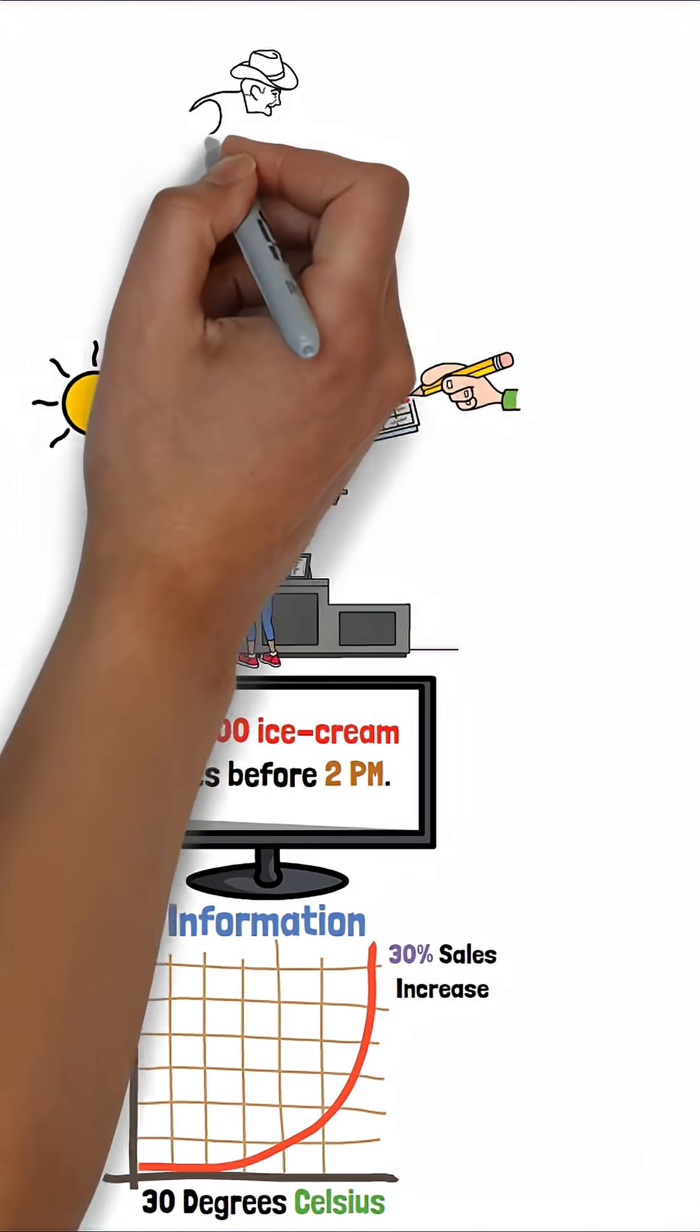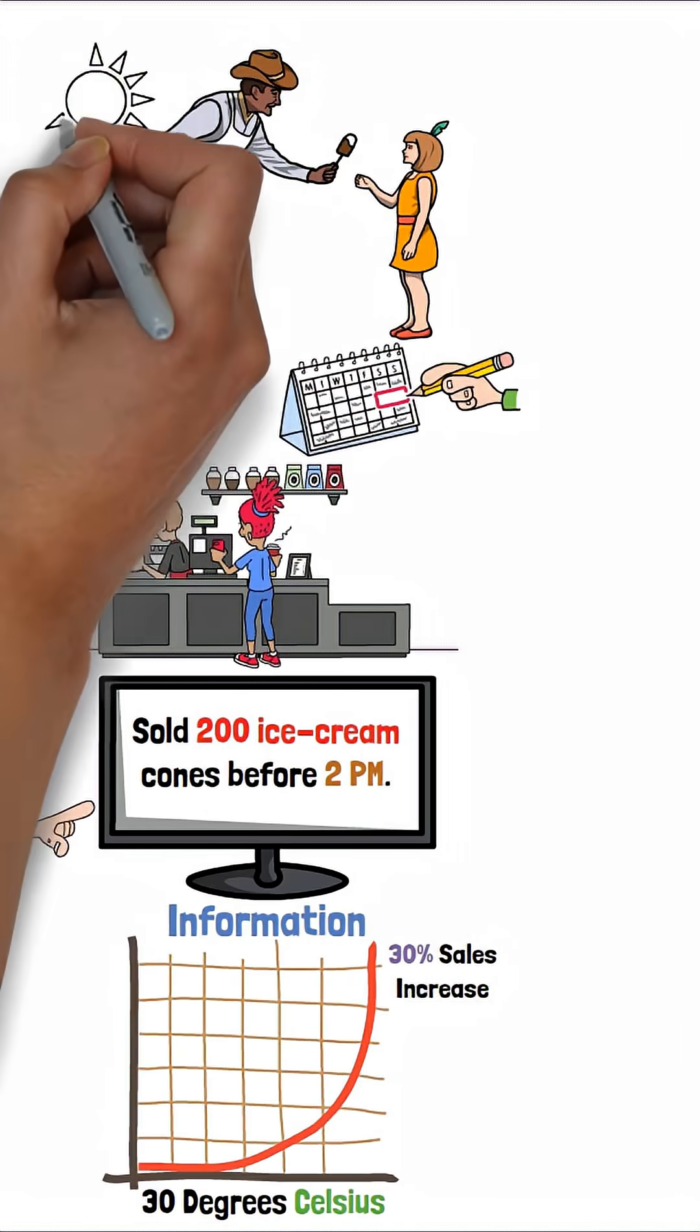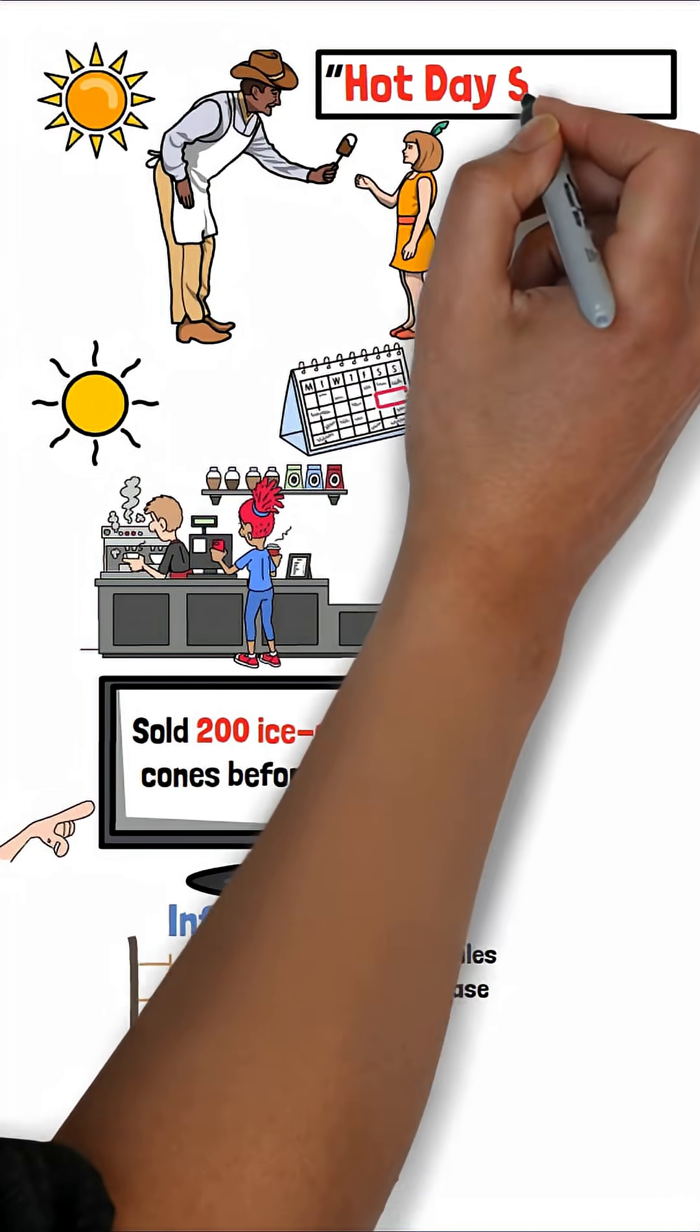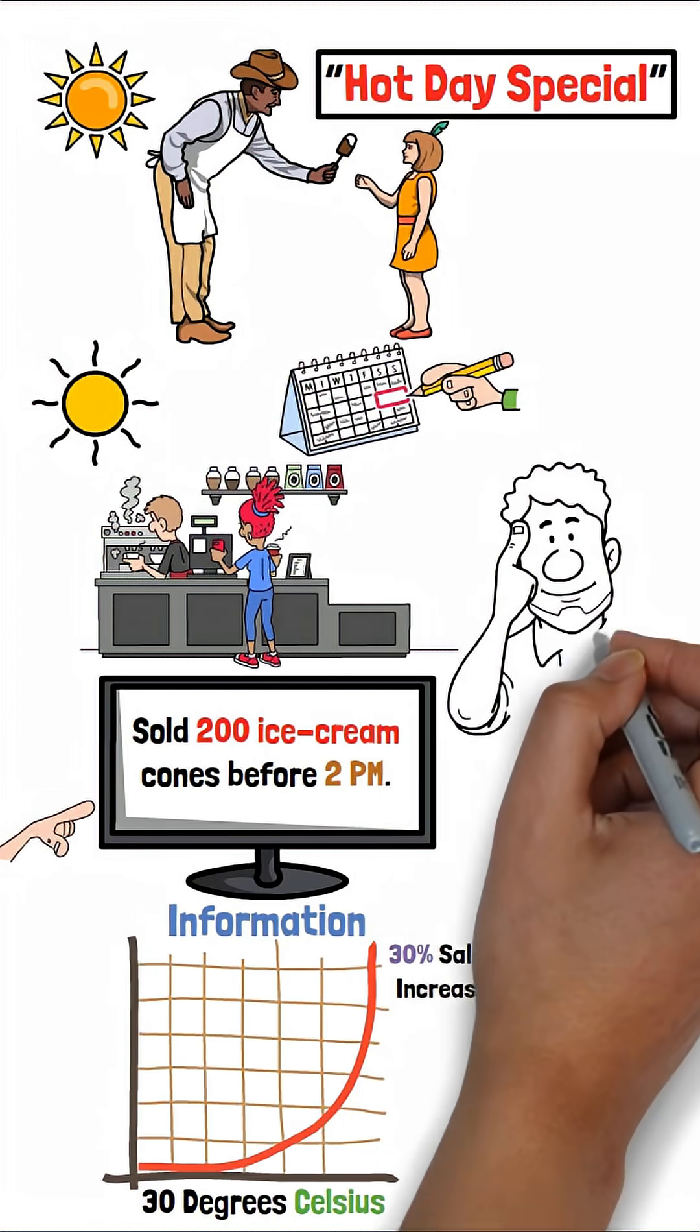When you compare that to last week's sales and notice a 30% increase whenever the temperature crosses 30 degrees Celsius, that's information. And when you use that insight to schedule an extra staff member on sunny days, launch a hot day special item, that's wisdom, that's leadership.